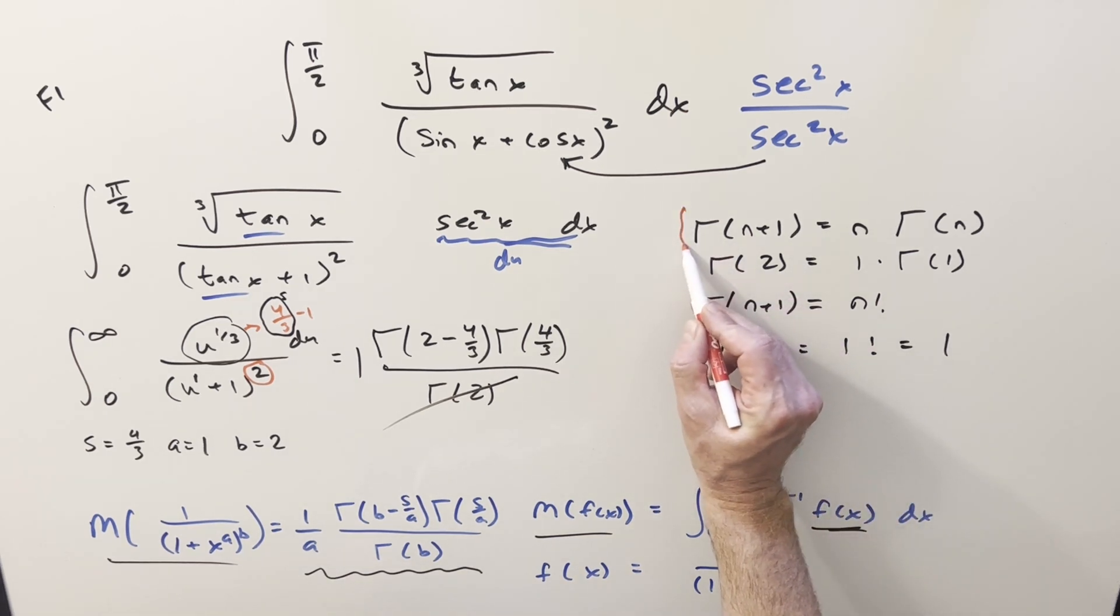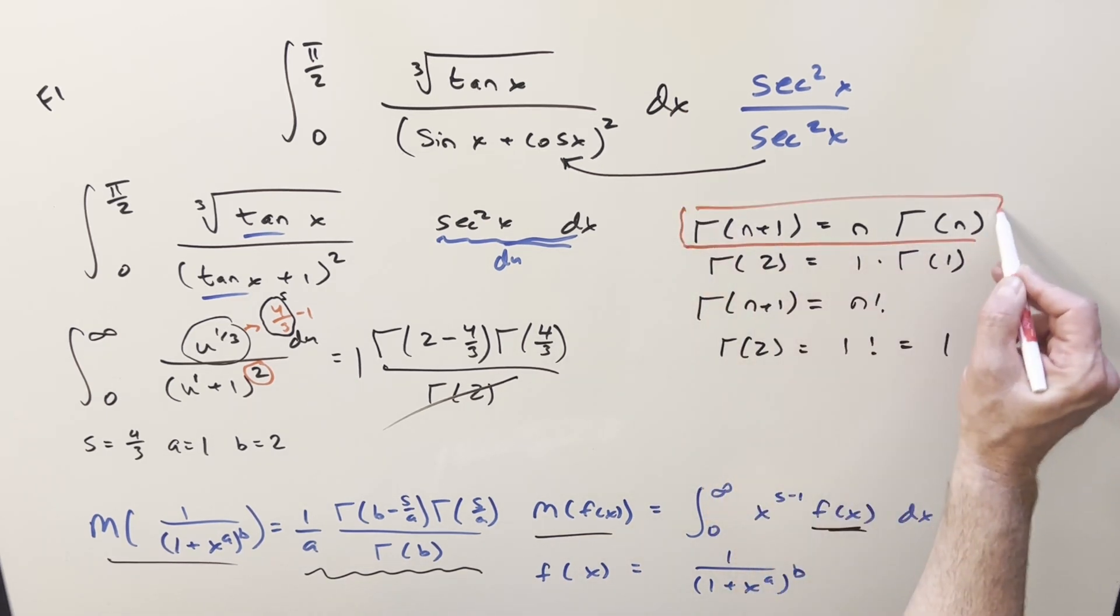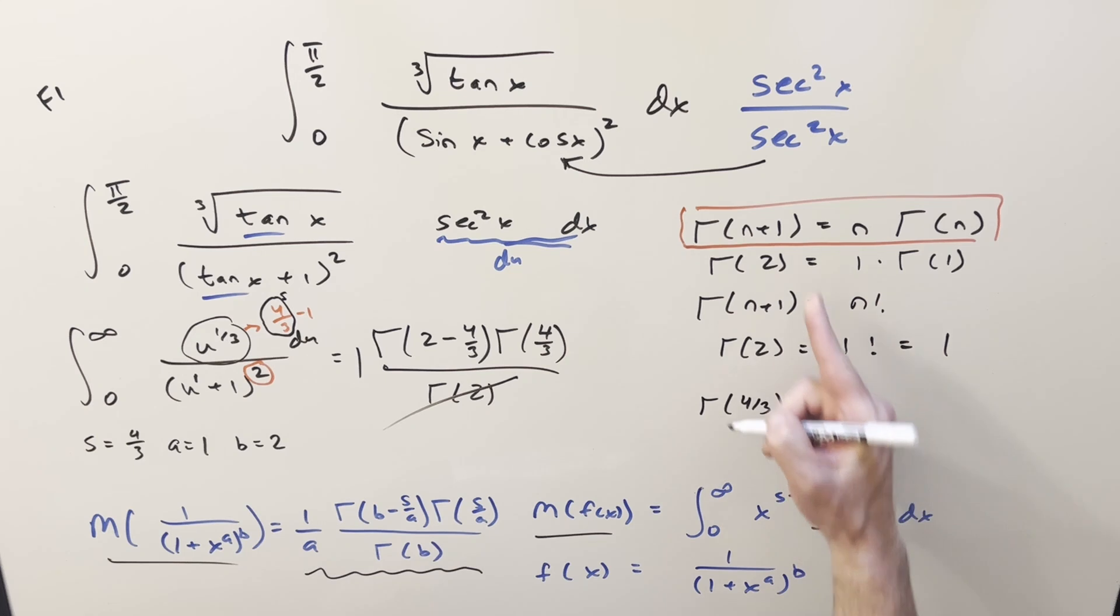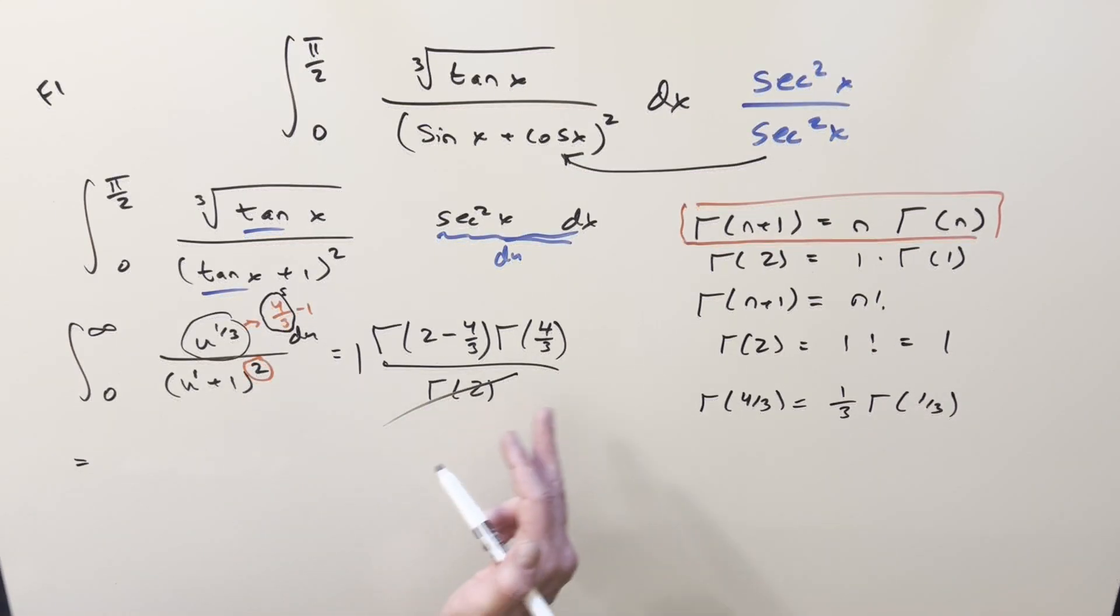But now I do have a use for this formula right here. It wasn't a total waste of time, because I can use it on this gamma of four thirds value we have right here. For gamma of four thirds, using this to reduce it by one, I can write gamma of four thirds as one third times gamma of one third. So now just cleaning this up, two minus four thirds is two thirds. So for the first part, we have gamma of two thirds. For the second part, we have this one third times gamma one third. Let's write it as gamma one third all over three.